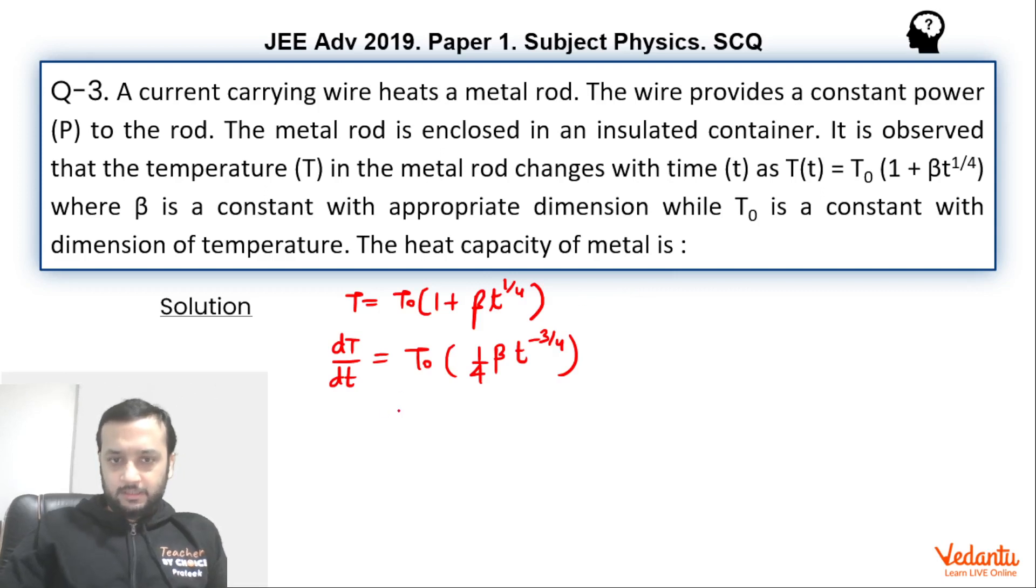So if you see, if you want to find the T to the power 1 by 4 value, if we find the value of this term, so T by T₀ minus 1, whole 1 upon beta, right, this is T to the power 1 by 4. This we can substitute it over here.